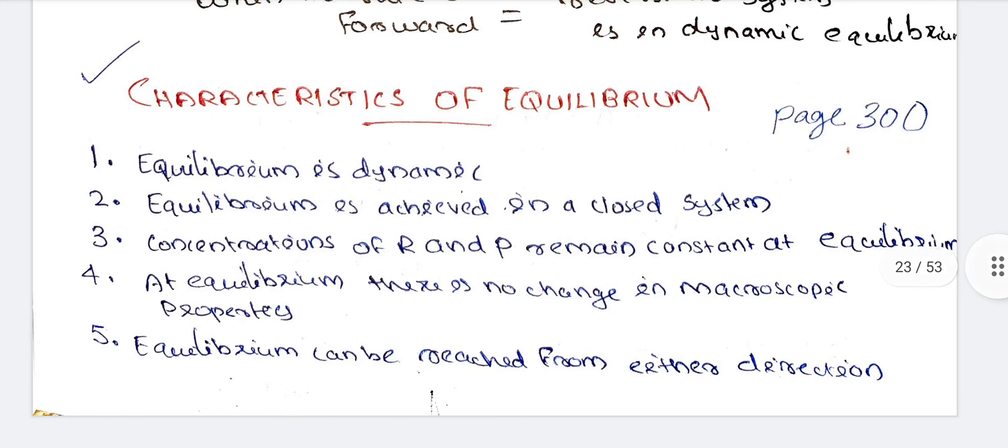We are talking about characteristics of equilibrium. Equilibrium is dynamic in nature. It is spontaneous process. Equilibrium is achieved in a closed system. Concentration of reactants and products remain constant. At equilibrium, there is no change in the macroscopic properties. Equilibrium can be reached from either direction.